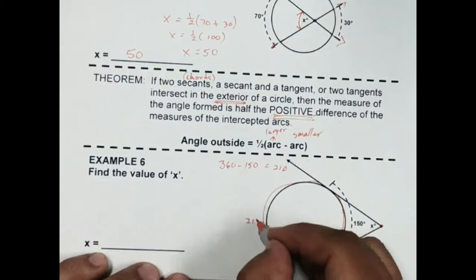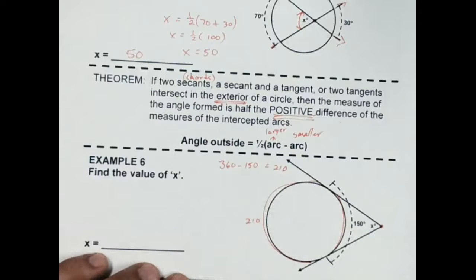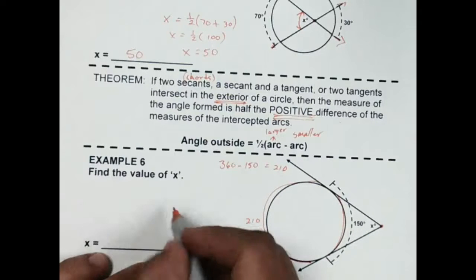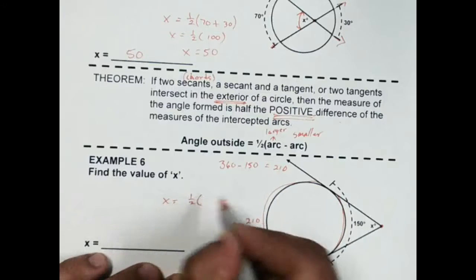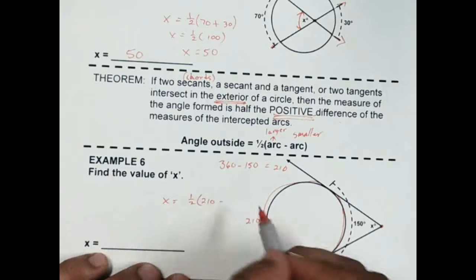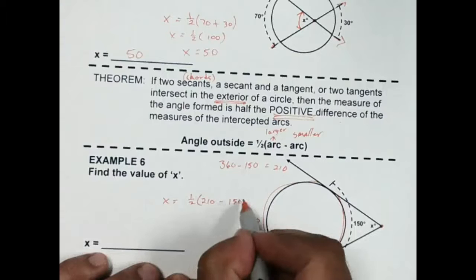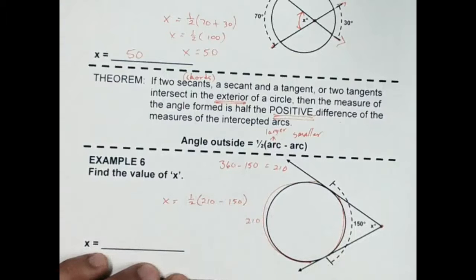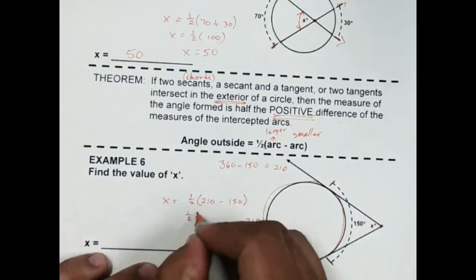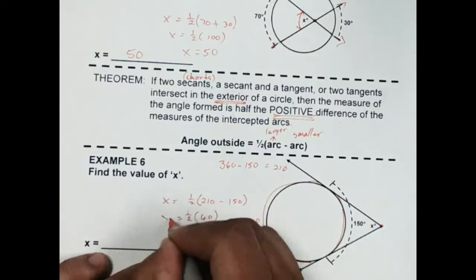So this arc on this side is 210. So in order to use this theorem, my angle, my x, is going to equal one half the larger arc minus the smaller arc. 210 minus 150 is going to give me 60. x is half of 60, which is going to be 30.